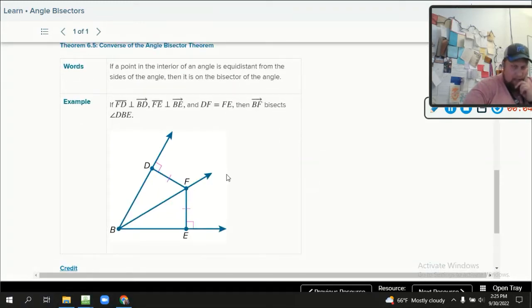This is the converse of that, where it's saying if we know they're perpendicular first and that they're the same length, then it must be that BF bisects the angle. So go ahead and write that down. These are just the same one backwards. Again, pause this, we're going, going, and gone.